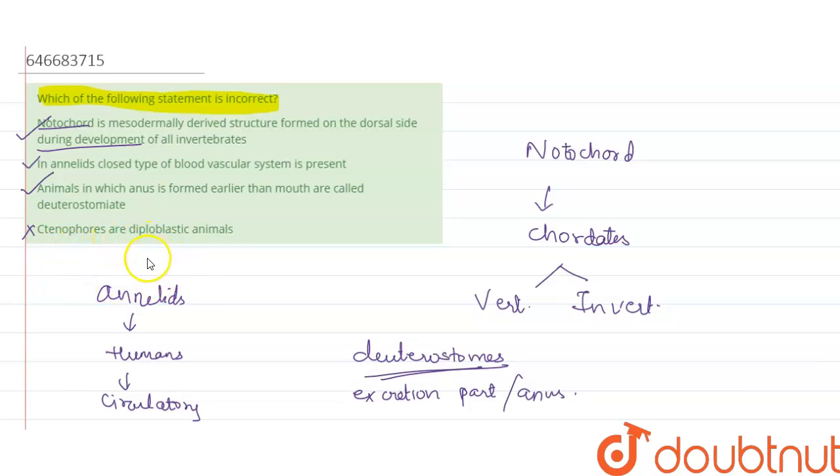But as per the researches it has been observed that there are few of the tenophores which are triploblastic as well. Now what is the difference between triploblastic and diploblastic? Triploblastic means three germinal layers.